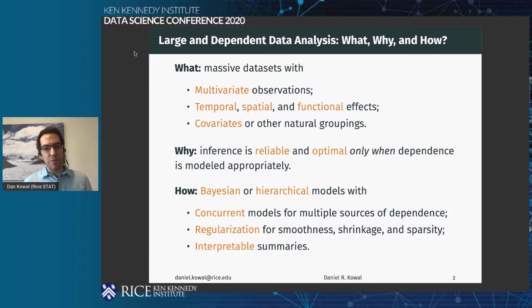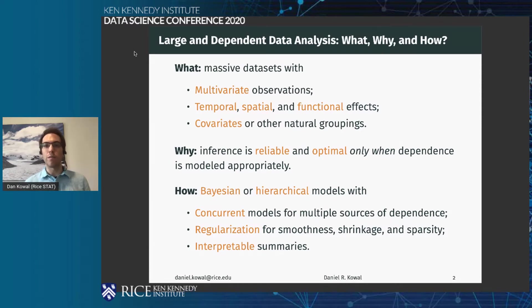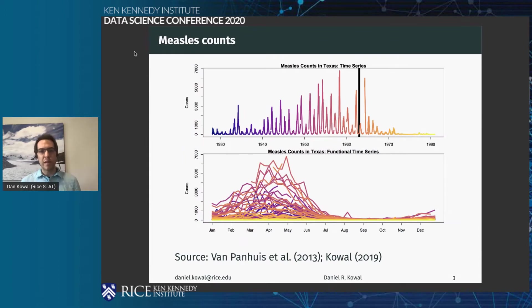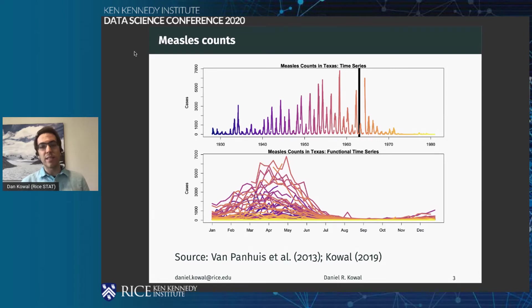The last piece I'm really interested in right now is: once you build up these adequate Bayesian models, how do you extract interpretable summaries? How do you make simple decisions that are clear and well-motivated from your models and from your complex data?